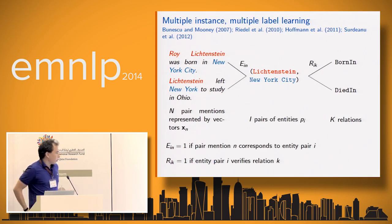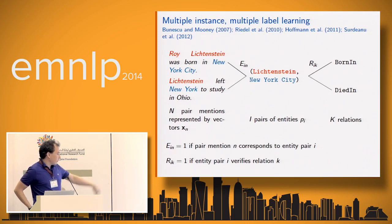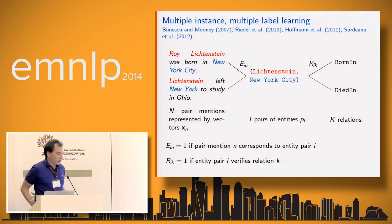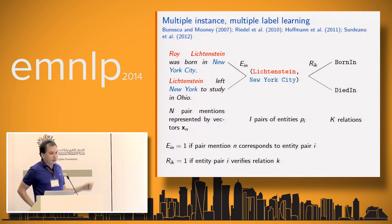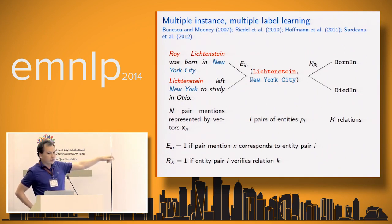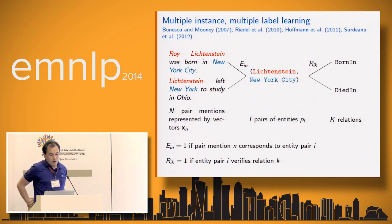Let me introduce some notation. We suppose we have I pairs of entities, and N pair mentions corresponding to these pairs, represented by feature vectors x_n. These I entity pairs can verify K relations. We introduce two matrices: E, which indicates which pair mentions correspond to which pairs of entities (entity linking), and R, which is the knowledge base indicating which relations are verified by which pairs of entities.